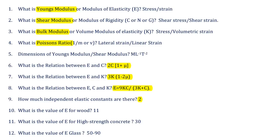Second question: what is Shear modulus? Shear modulus is nothing but the ratio of shear stress to shear strain. It is denoted by the symbol C, N, or G. Generally, C is used for shear modulus and G is used for modulus of rigidity. Shear modulus is also known as modulus of rigidity, and it has the same unit as Young's modulus.